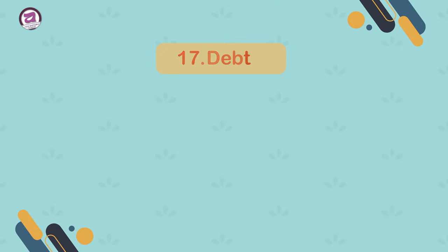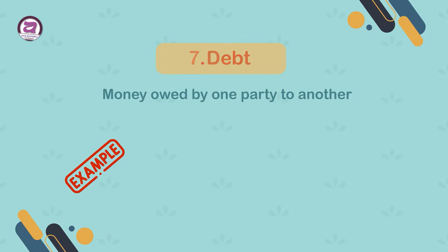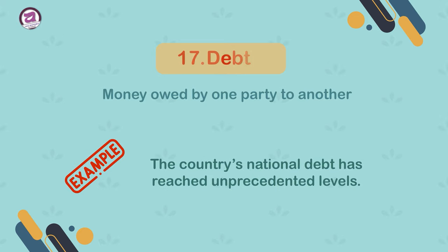17. Debt. Money owed by one party to another. Example: the country's national debt has reached unprecedented levels.